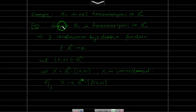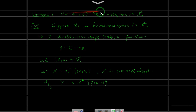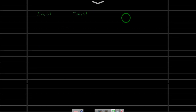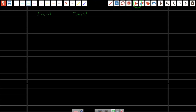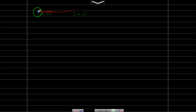Welcome back to the series of videos on topology. In the previous video we proved that R with the usual topology is not homeomorphic to R², and then I gave as an exercise to show that certain intervals are not homeomorphic. So today let's prove that the closed interval [a,b] is not homeomorphic to the half-open interval [a,b).